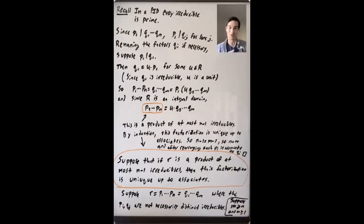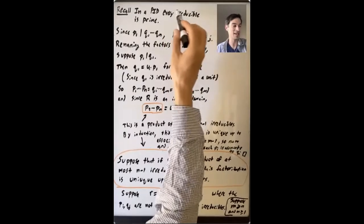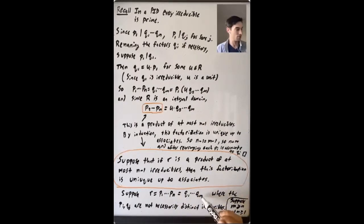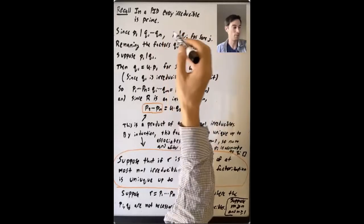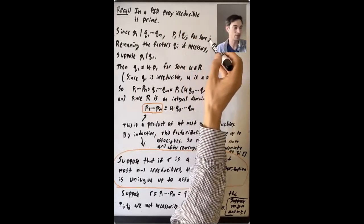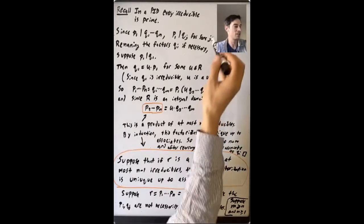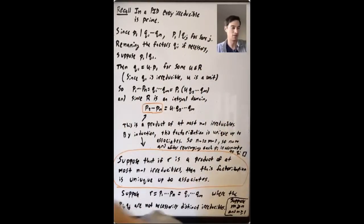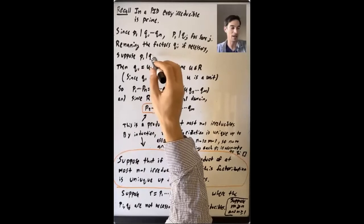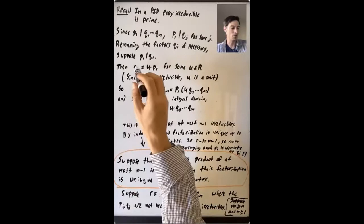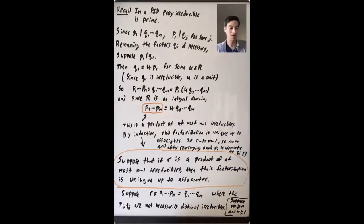We have these two factorizations of r into products of irreducible elements. In a PID, every irreducible is prime, so p1 is prime and p1 divides the product q1 through qm. Therefore p1 must divide qj for some j. We can rename the factors q1 through qm and relabel qj as q1.